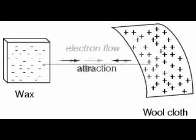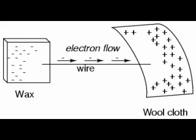If a conductive wire is placed between the charged wax and wool, electrons will flow through it as some of the excess electrons in the wax rush through the wire to get back to the wool, filling the deficiency of electrons there.